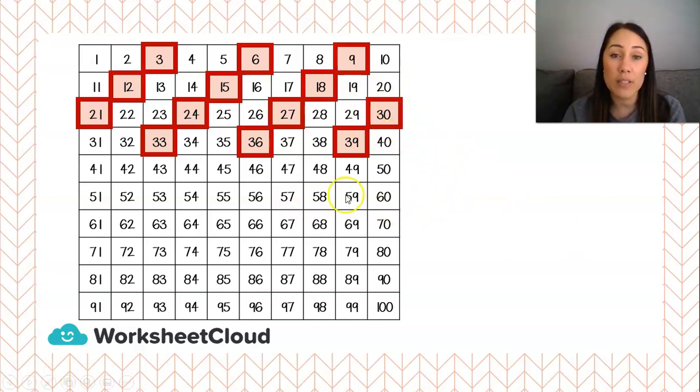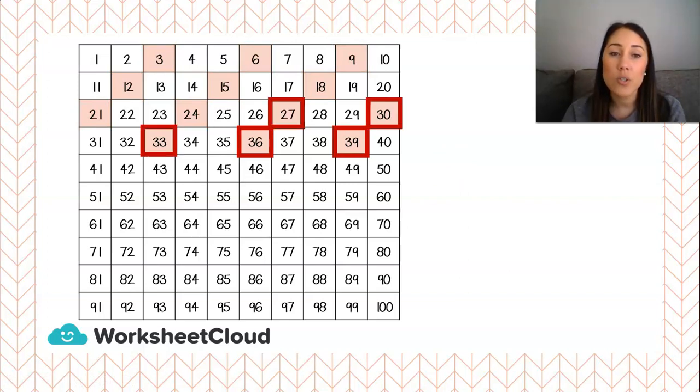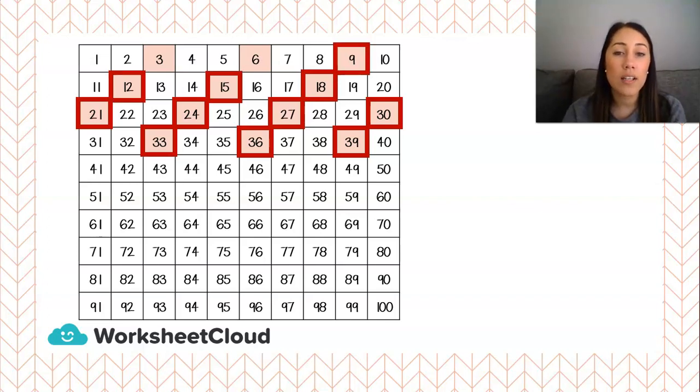But let's see if we can count backwards now in 3s. We're going to start at 39, 36, 33, 30, 27, 24, 21, 18, 15, 12, 9, 6 and 3. Well done, grade 2s.